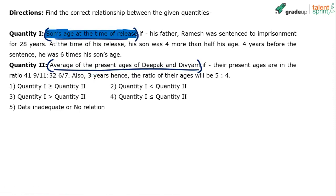We are focusing on the son's age at the time of release. Let us assume that the son's age is S and the father's age is F — both at the time of release. So S is the son's age at the time of release, and F is the father's age also at the time of release.